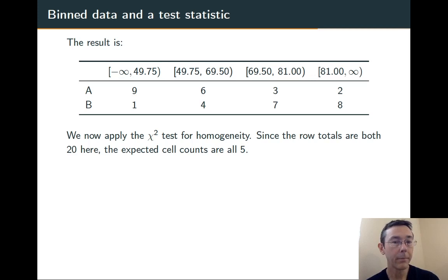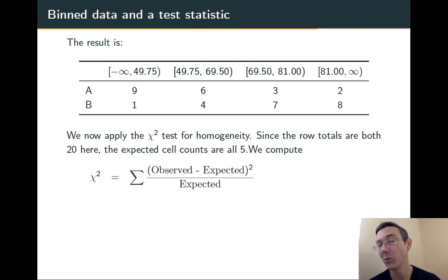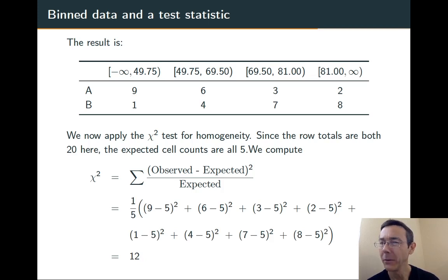Let's compute our chi-squared statistic. We take observed minus expected, square it, divide by expected for each bin, then add them all up. Here we get 12.